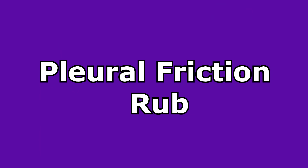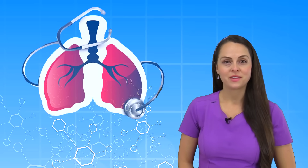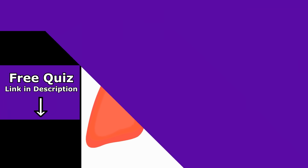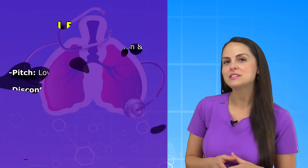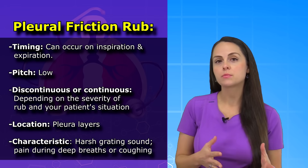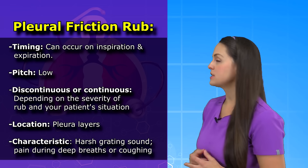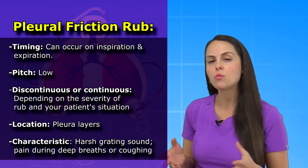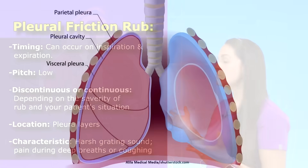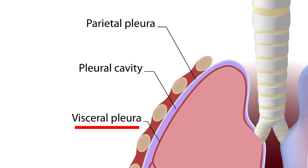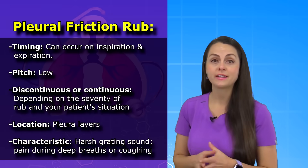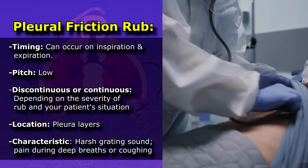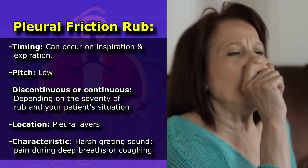Finally, we have pleural friction rub. How do you know that you're hearing a pleural friction rub? With pleural friction rubs, they can occur on inspiration and expiration, and they're going to have a low pitch. They can be discontinuous or continuous depending on the severity and what's going on with your patient. It's located in the pleura layer — the layers that surround your lungs, made up of the visceral pleura and the parietal pleura. It has a defining characteristic: you're going to hear a harsh grating sound, and your patient is probably going to have pain, especially when they take deep breaths in or cough.